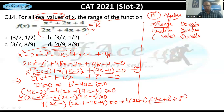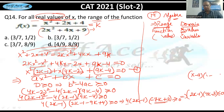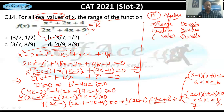Simplifying the bracket: (2k−1−9k+4) = (−7k+3). So the inequality becomes 4(2k−1)(−7k+3) ≥ 0. Multiplying through by −1 flips the sign: (2k−1)(7k−3) ≤ 0, giving the range 3/7 ≤ k ≤ 1/2. As per the given options, the answer is option B.